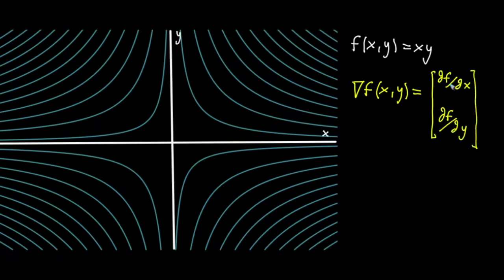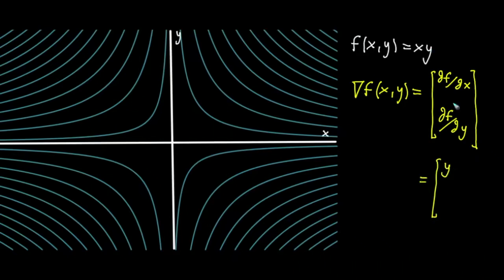When we actually do this for our function, we take the partial derivative with respect to x. x looks like a variable, y looks like a constant, the derivative of this whole thing is just equal to that constant y. And then kind of the reverse for when you take the partial derivative with respect to y. y looks like a variable, x looks like a constant, and the derivative is just that constant x.